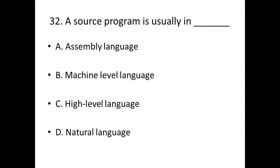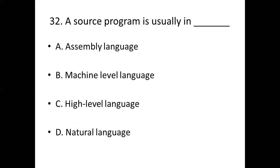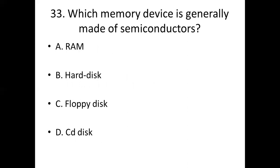Thirty-second bit: A source program is usually in dash. Option A: Assembly language. Option B: Machine level language. Option C: High level language. Option D: Natural language. Answer: Option C, high level language.